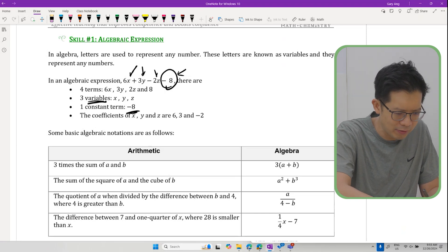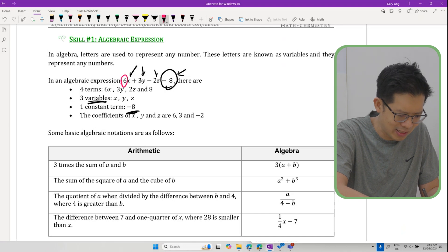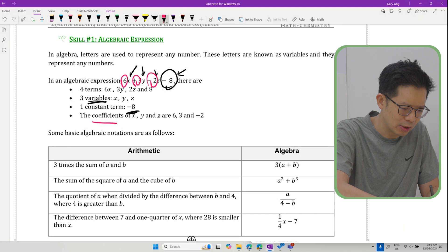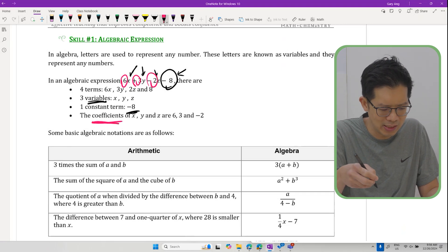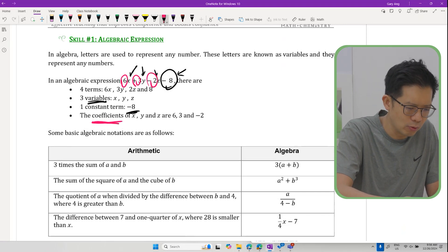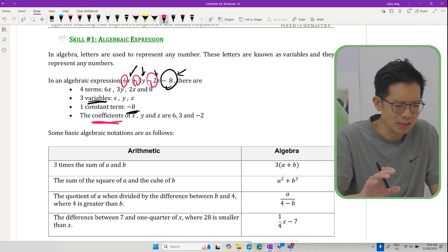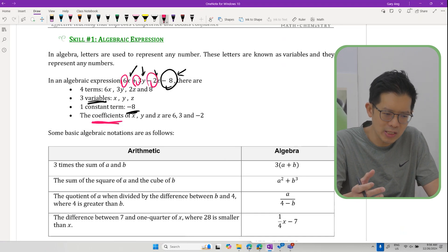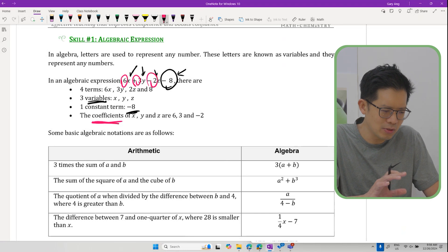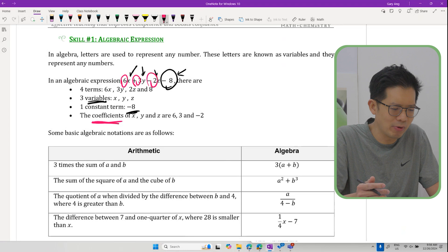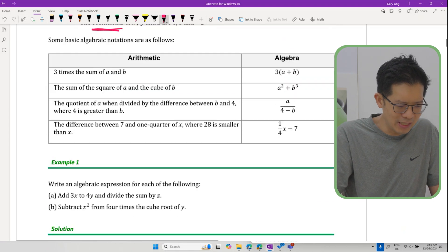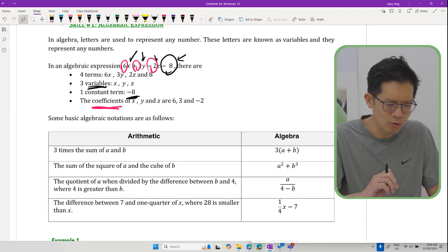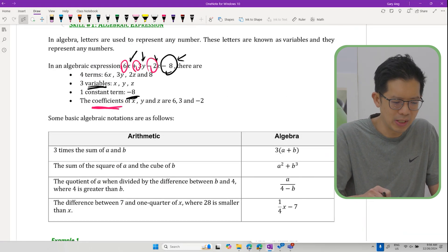We have numbers like 6 next to the X, positive 3 next to the Y, and negative 2 next to the Z. These are what we call the coefficients of X, Y, Z respectively. We need to get in tune to all these terms that teachers will be using to describe. Some students may not fully understand what the teacher is talking about when they say write down the coefficient of X and they wonder what is a coefficient.